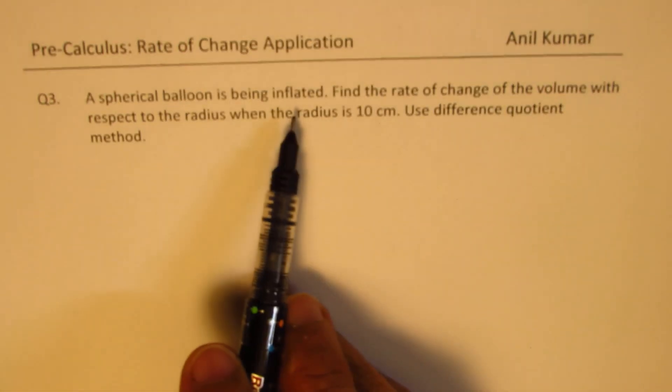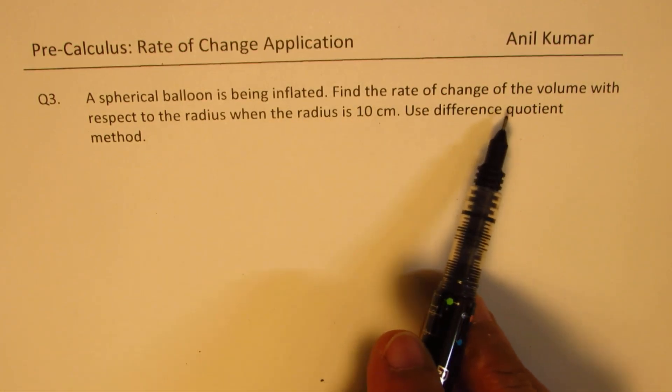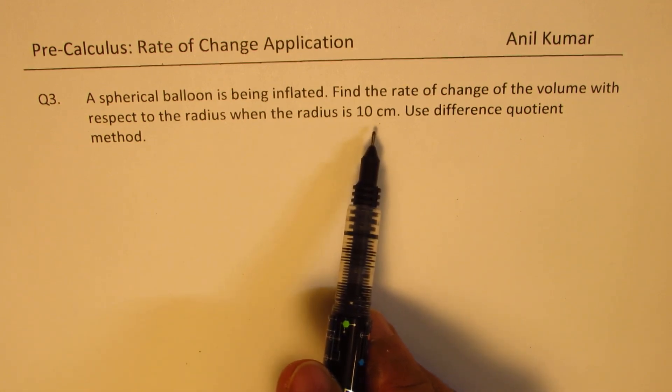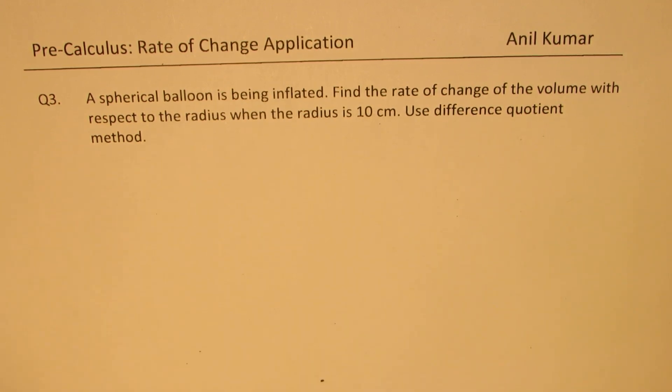A spherical balloon is being inflated. Find the rate of change of the volume with respect to the radius when the radius is 10 centimeters. Use difference quotient method.